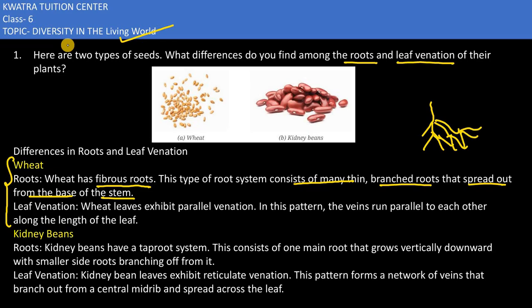Now how does the leaf venation look? It is parallel venation. That means the lines would be parallel with respect to each other. In this pattern, veins run parallel to each other along the length of the leaf, as shown in the diagram.